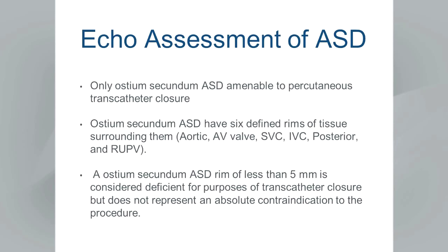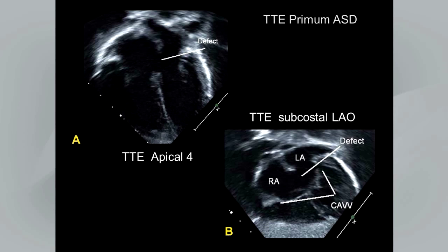Only ostium secundum atrial septal defects are amenable to percutaneous transcatheter closure. Secundum ASDs have six defined rims of tissue: aortic, atrioventricular valve, SVC, IVC, posterior, and right upper pulmonary vein. A rim of less than five millimeters is considered deficient for purposes of transcatheter closure, but this is not an absolute contraindication. Multiple or extensive rim deficiencies represent a caution — a yellow flag — for performing transcatheter closure.